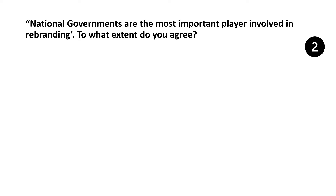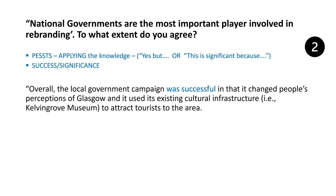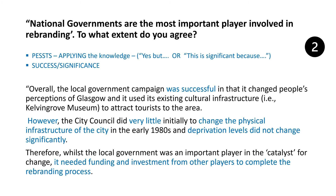In the second part of this argument — just a couple of lines — I'm applying my knowledge, going either 'yes it is true' or 'this is significant because.' I talk about success and significance: it was successful in changing people's perceptions, however it was only slightly significant because it didn't actually change the infrastructure in the 80s — it just changed the image, and deprivation levels were still very high. I therefore summarise that local government can often be the catalyst for change, but it needs funding and investment to actually complete the process.